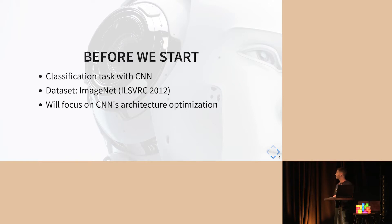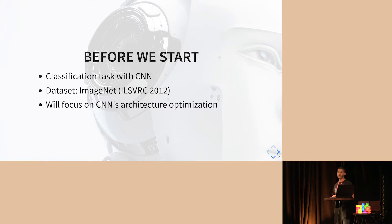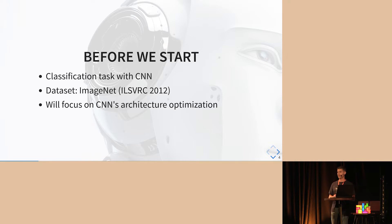Before starting the talk, I want to make sure we have the same basis. I will talk about a classification task with convolutional networks. We will evaluate this classification task on the dataset called ImageNet — it's a standard for the task. And what I call network optimization, I mean the structure of the network — the different operations inside the network and not the parameters for these operations.